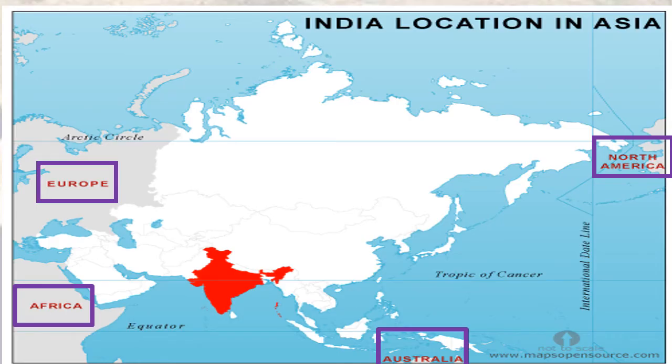Geographically, India is part of the continent of Asia. It is the 7th largest country in the world in terms of area and has the 2nd largest population in the world after China. However, owing to its large size and its relative isolation from the rest of Asia because of the protective barrier of the Himalayas, it has developed its own distinct physical and cultural identity.